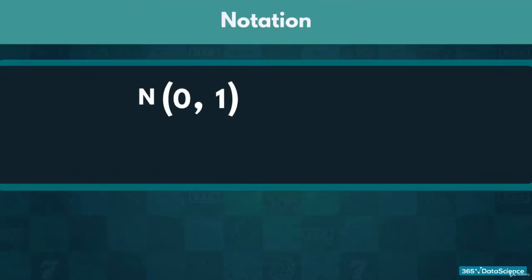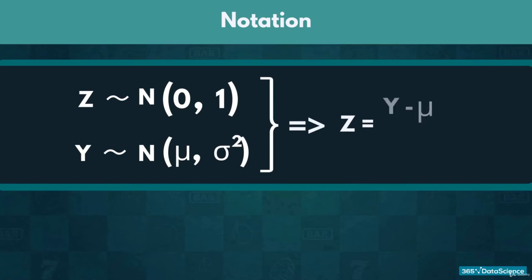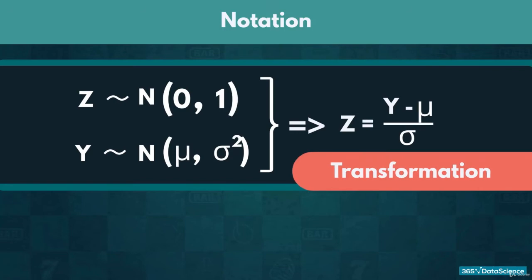If we denote the standard normal distribution with Z, then for any normally distributed variable Y, Z equals Y minus mu over sigma. This equation expresses the transformation we use when standardizing.